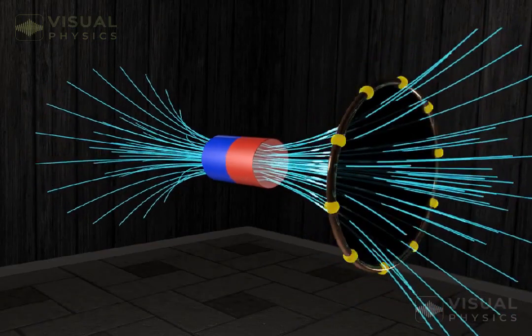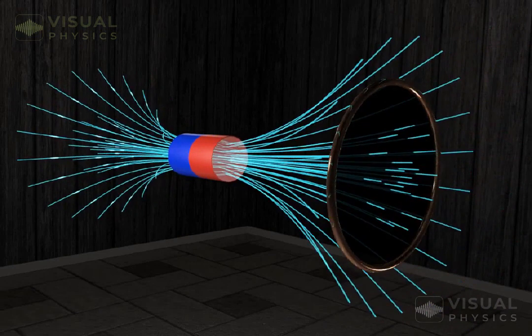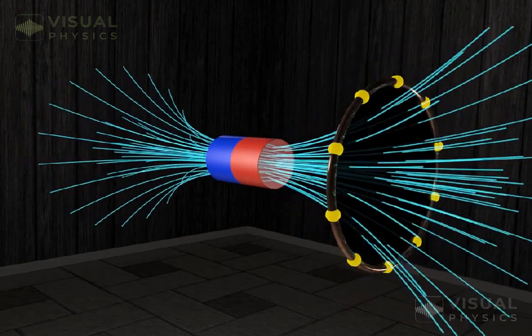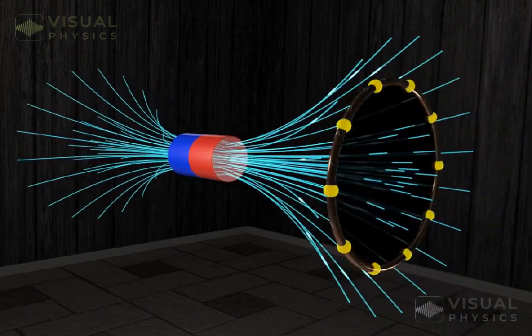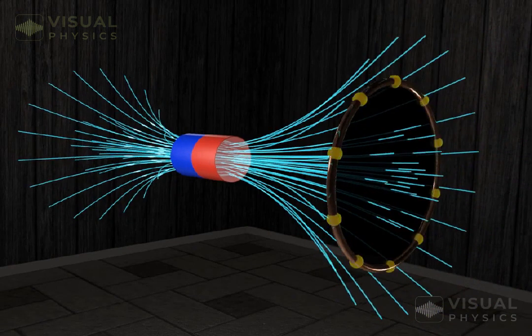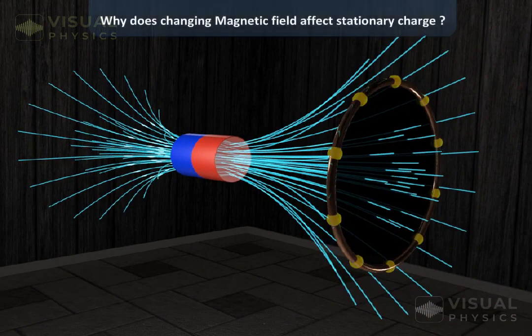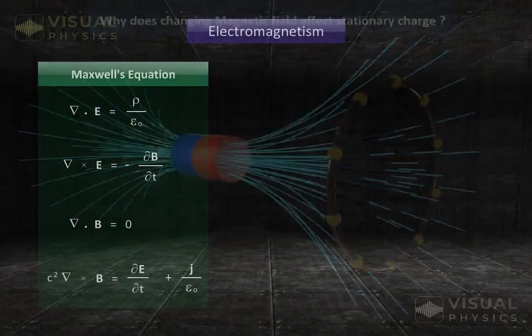Till now we have discussed that a changing magnetic flux induces electric current. But the question that remains unanswered is why does a changing magnetic field affect electric charges?